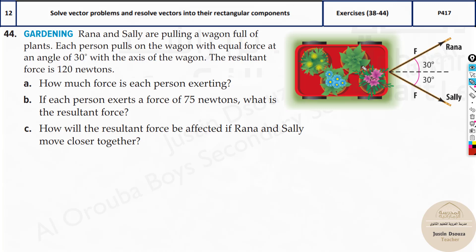Now here there is another interesting question. Rana and Sally are pulling a wagon full of plants. Each person pulls the wagon with equal force at an angle of 30 degrees with the axis of the wagon. The resultant force is 120 Newtons. Now what is the resultant force? The resultant is this force basically, 120 Newtons. Now what happens is, imagine you are pushing something in this direction. You are pushing this wagon, but the wheels are aligned towards the horizontal, it will move towards the front. So the resultant is always this force.